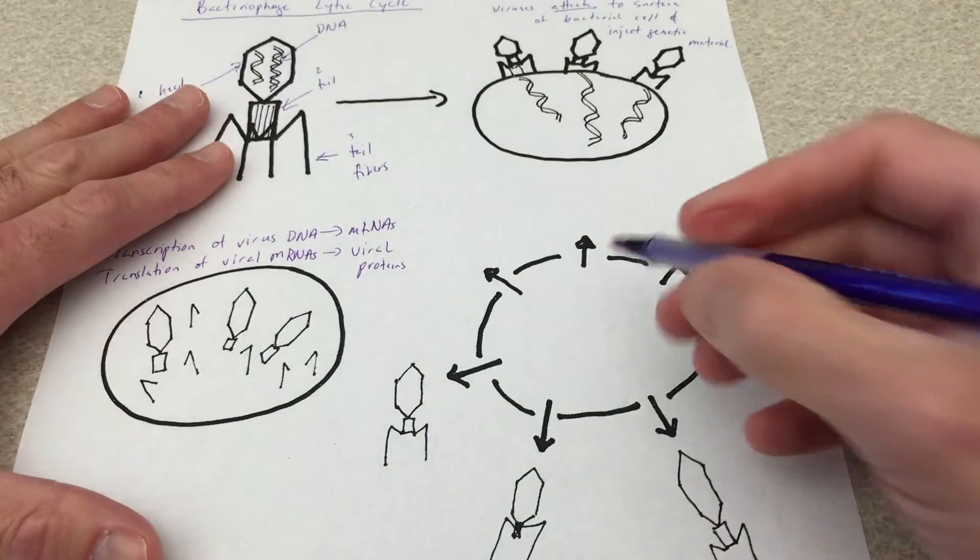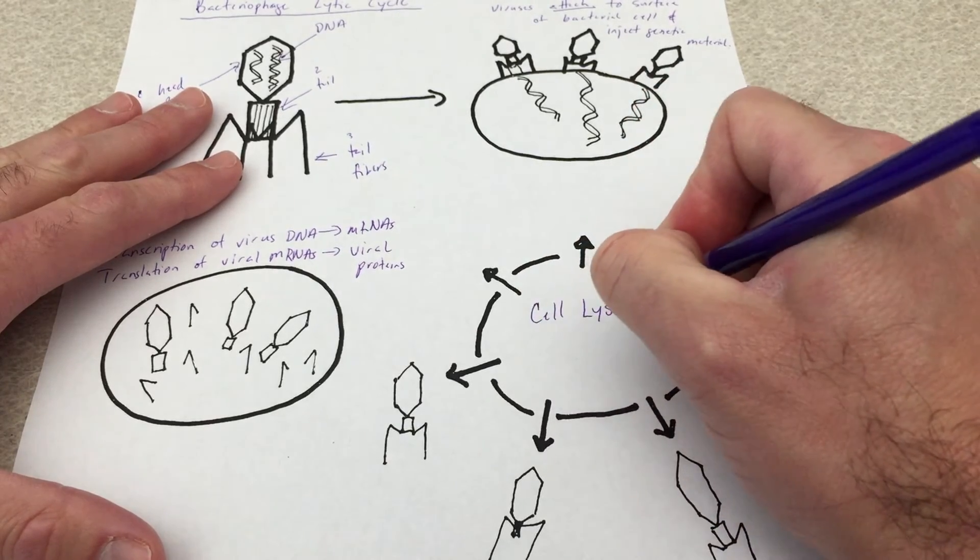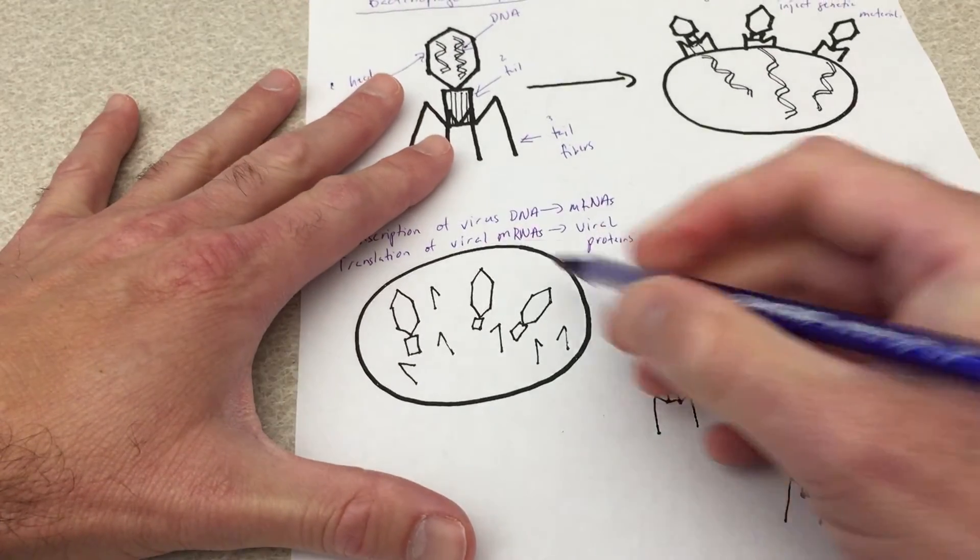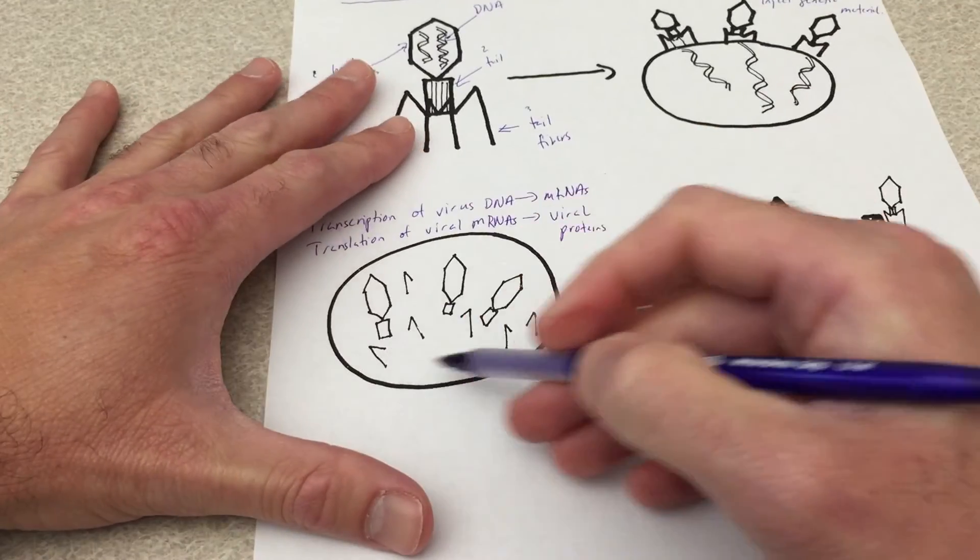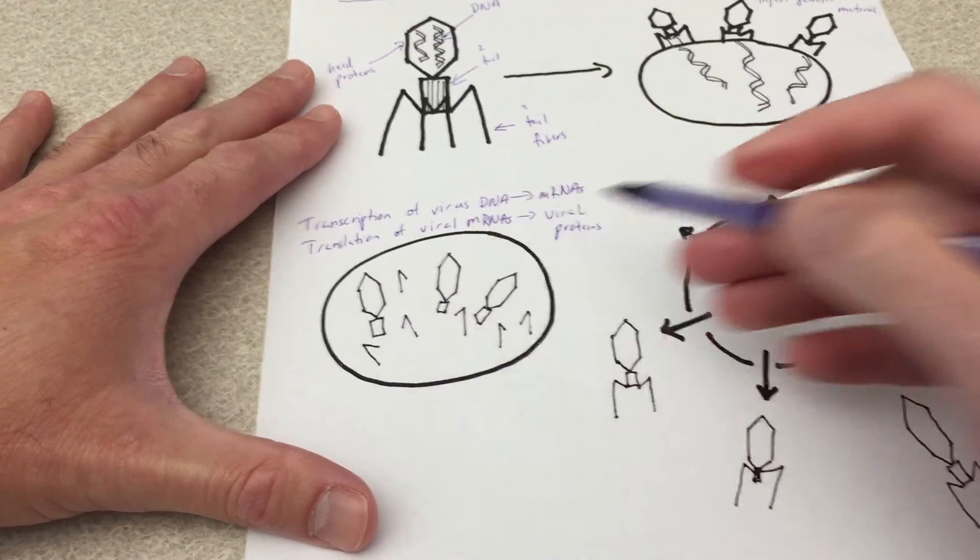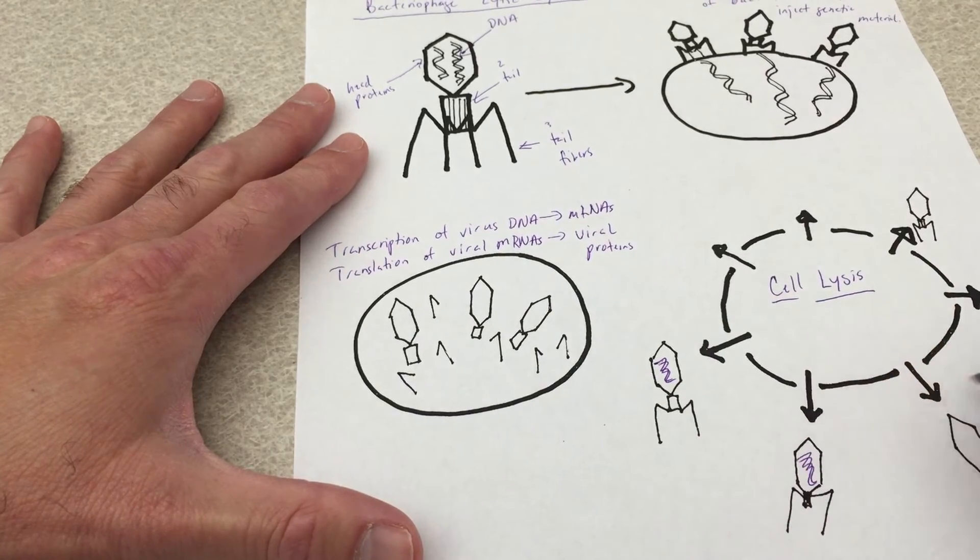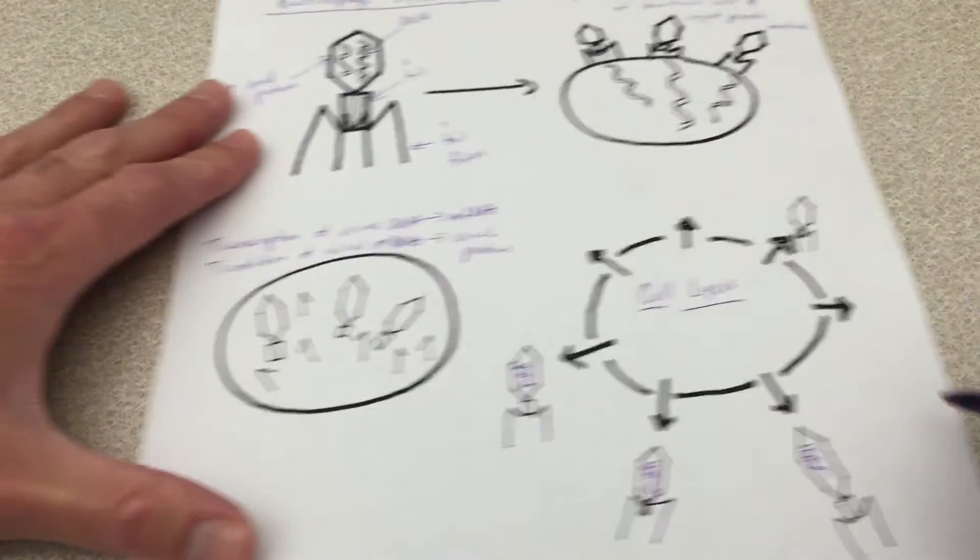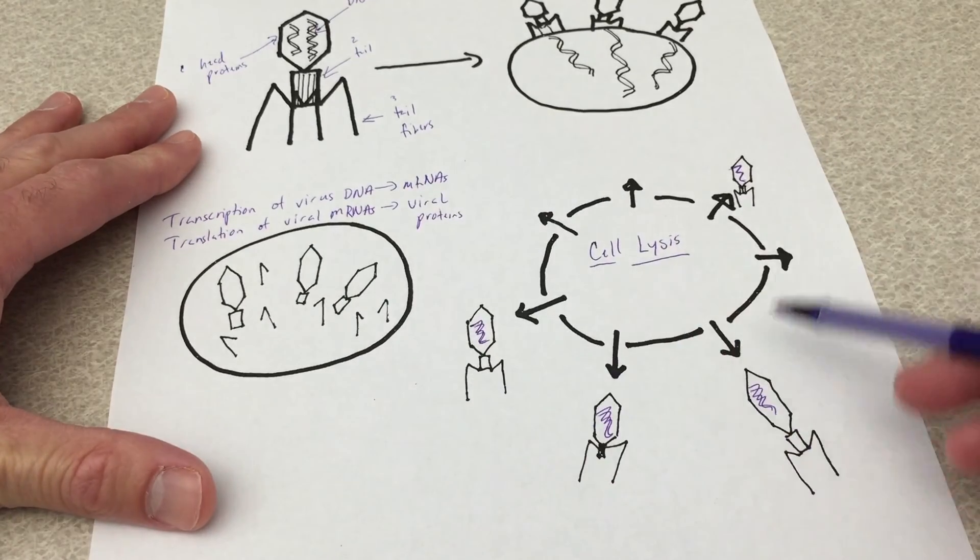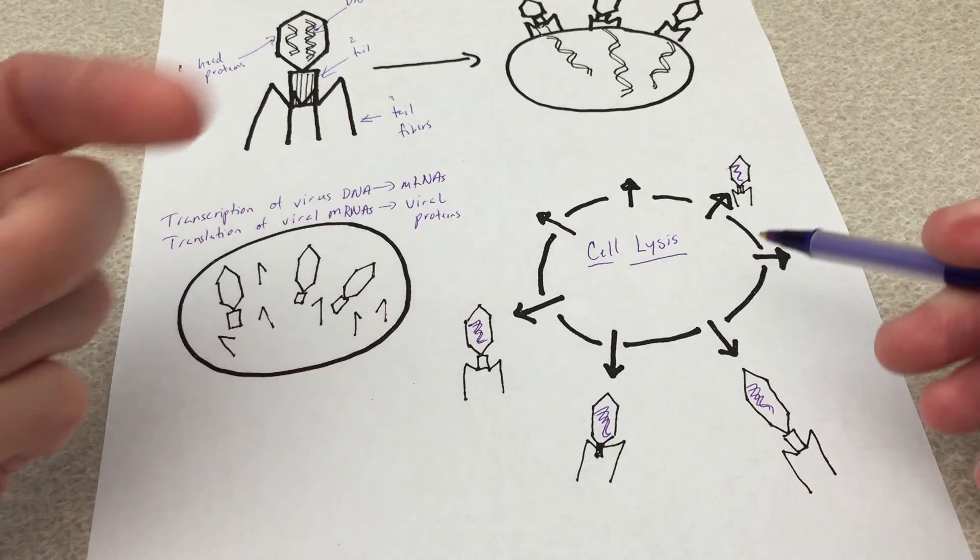In this last step, this is cell lysis. So now that we have the DNA copied inside of the cell, the transcribed and translated proteins of the viruses, now we have new bacteriophage viruses with their double-stranded DNA genomes that burst out of the cell. And that is the bacteriophage lytic cycle.